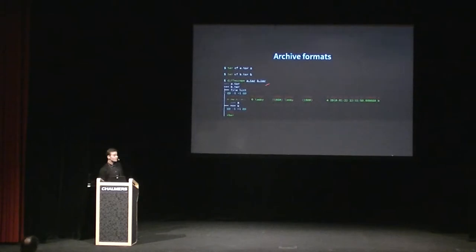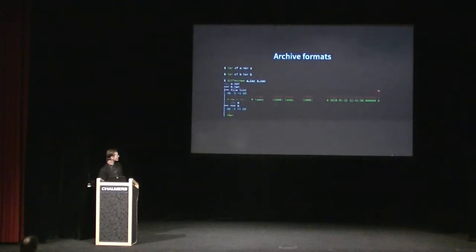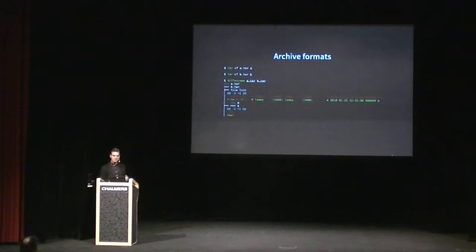Here's Diffoscope when you pass it tar archives. You start to see a tree structure: A.tar has a file list and it contains a file called A, B.tar contains a file called B with particular metadata. And A contains a very different graph. So you're starting to see that it can unpack archive formats.